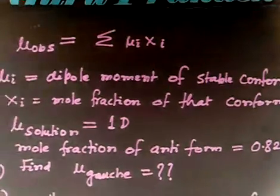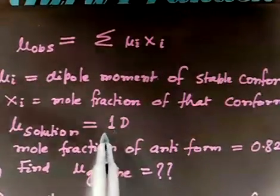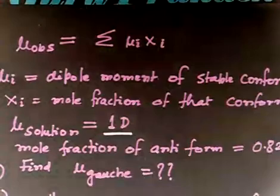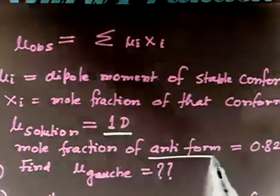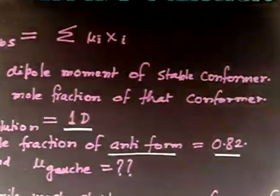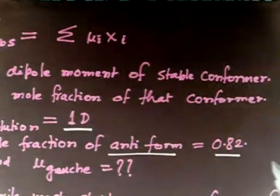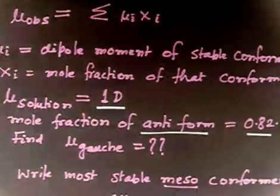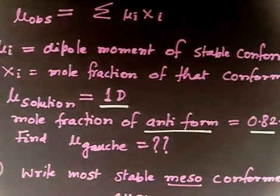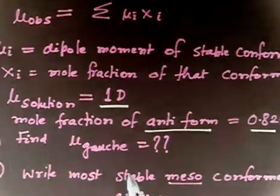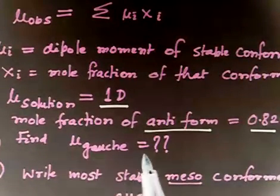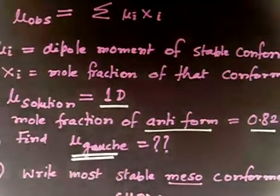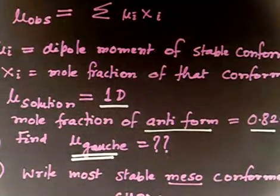We have a solution with a dipole moment of 1 Debye, and the mole fraction of the anti form is 0.82. We need to find the mole fraction and calculate mu_gauche, the dipole moment of the gauche conformer.